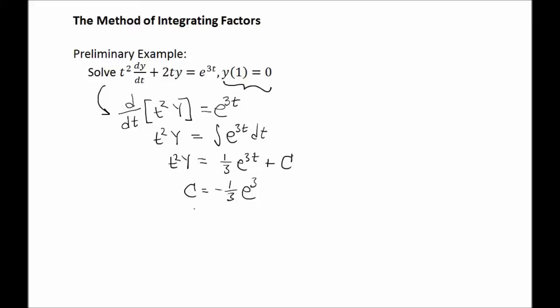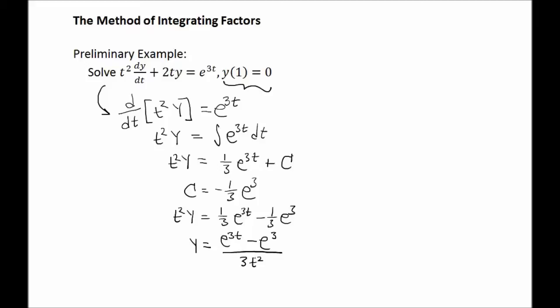You should probably check this on your own to make sure you get the same thing. Now if we plug that back in, we get t squared y equals one-third e to the 3t minus one-third e cubed. Then we can isolate y by dividing both sides by t squared. Simplifying, the answer is y equals (e to the 3t minus e cubed) over 3t squared. This is the solution of our initial value problem.